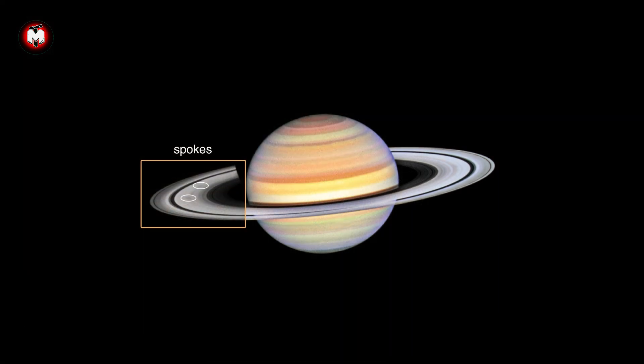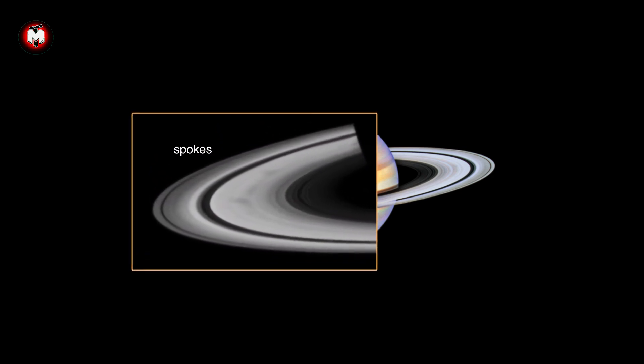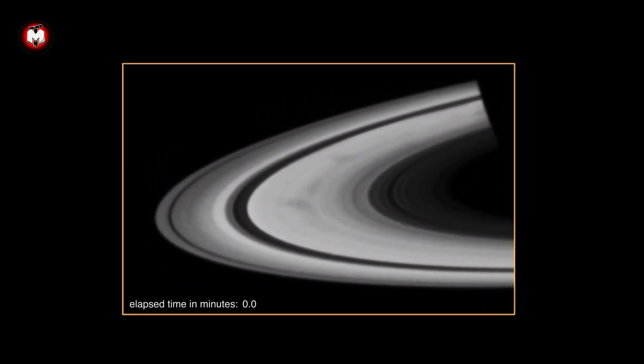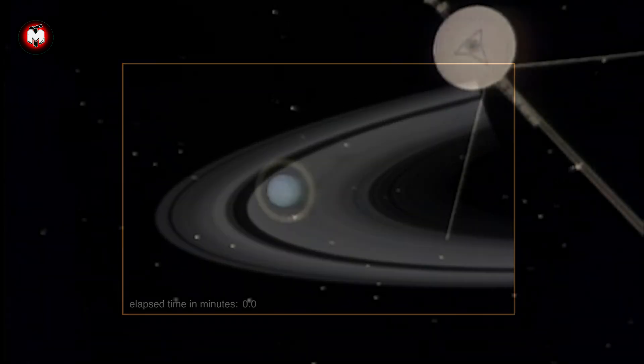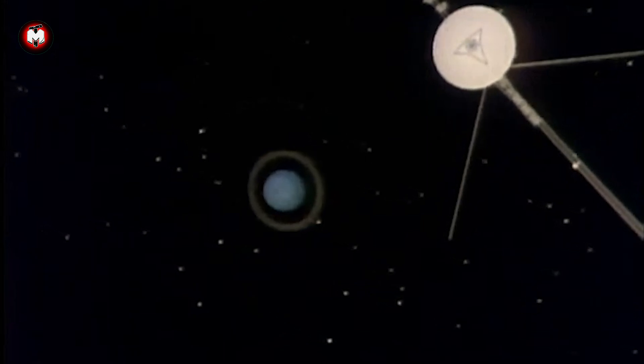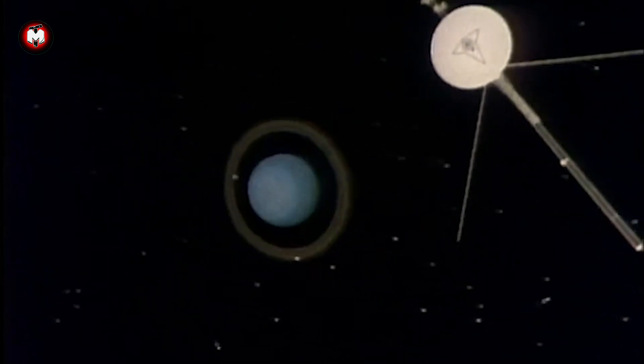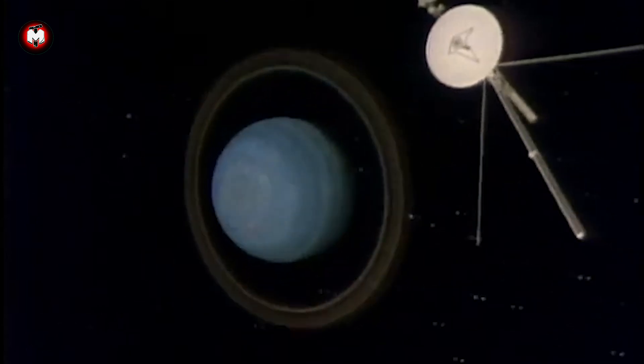In November 1980, Voyager 1 reached Saturn, revealing the incredible complexity of its ring system. The rings weren't smooth bands, but thousands of individual ringlets with strange spokes rotating through them like cosmic wheel spokes. Voyager 1's encounter with Saturn's moon Titan revealed a thick atmosphere and what appeared to be lakes of liquid methane. Meanwhile, Voyager 2 continued the grand tour, eventually becoming the only spacecraft to visit Uranus and Neptune, revealing these ice giants in unprecedented detail.